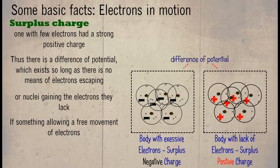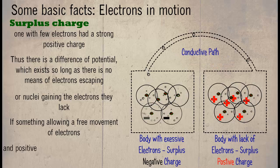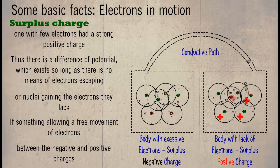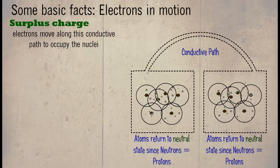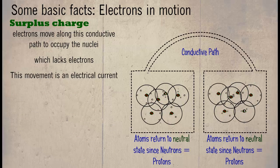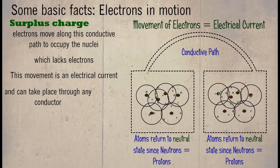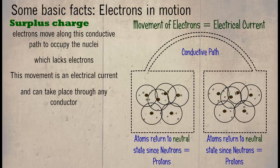If something allows a free movement of electrons between the negative and positive charges, electrons move through the conductive path to occupy the nuclei which lack electrons. This movement is an electrical current, and can take place through any conductor, such as a wire.